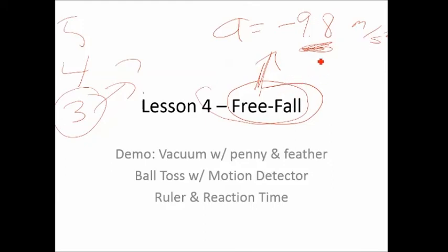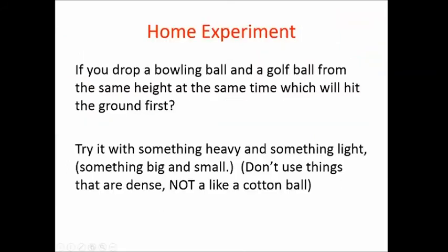Anytime we're flying through the air, down is negative and up is positive, so our acceleration will be negative 9.8.